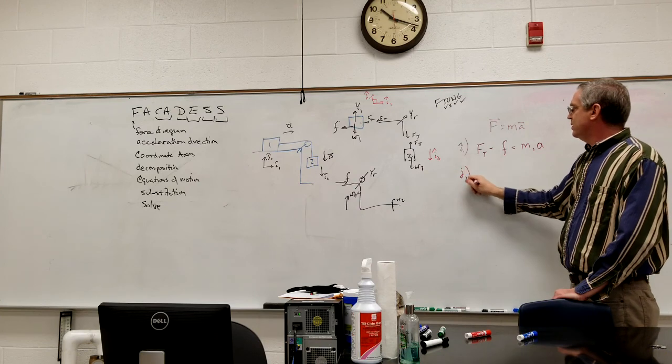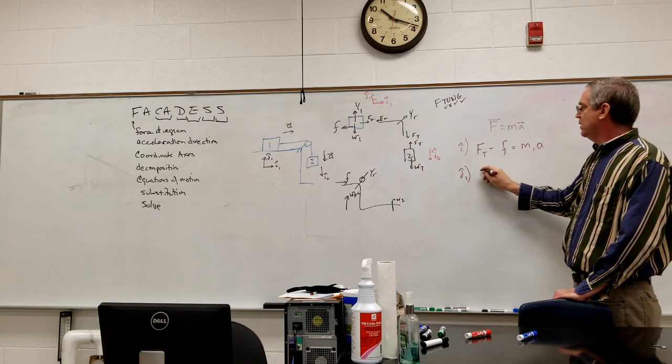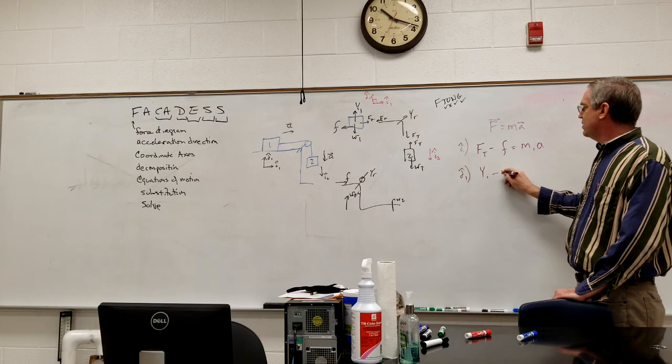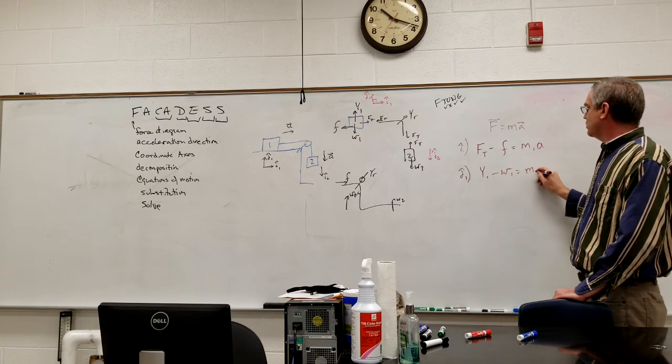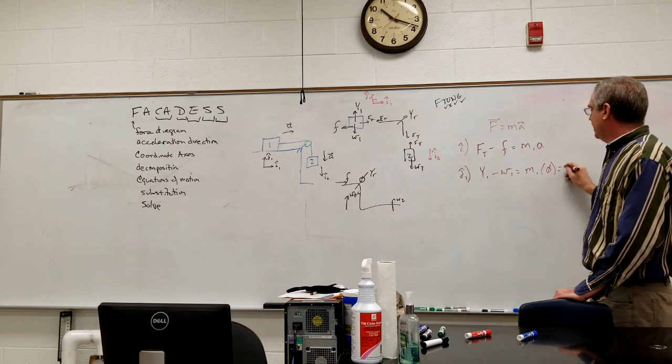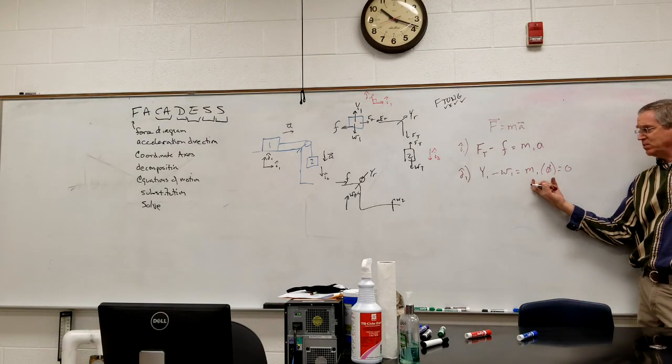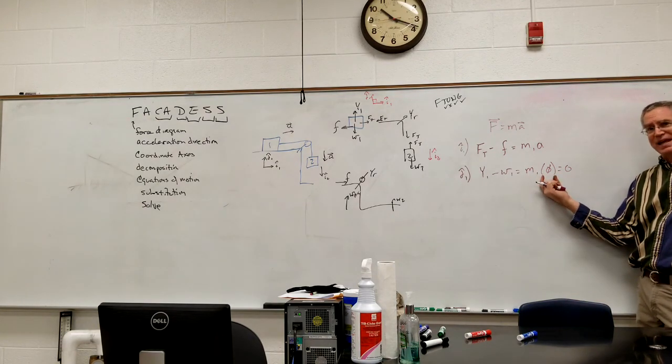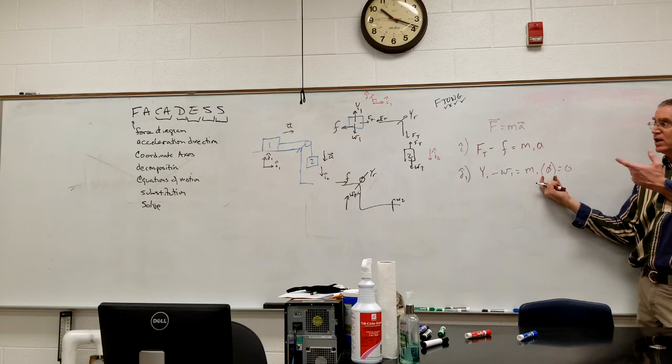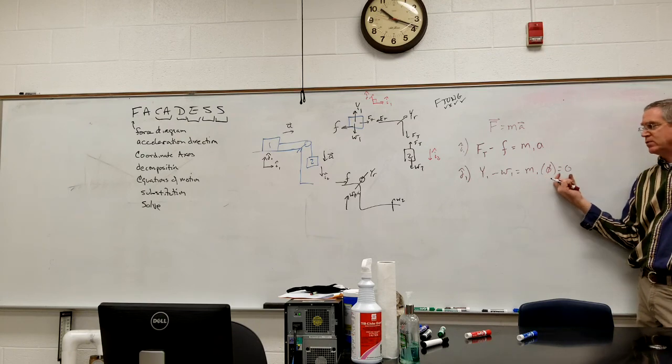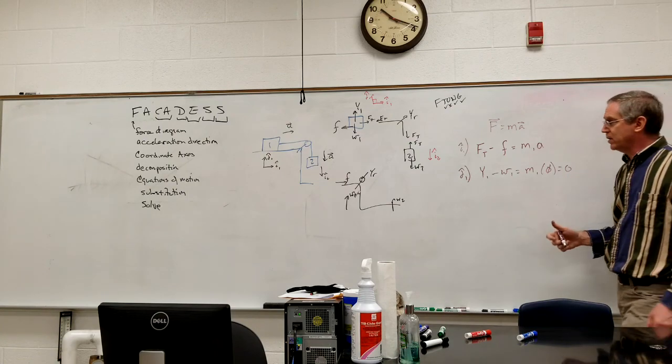My J one hat direction equation, I have Y one minus W one is equal to mass one times zero. At some point, we're just going to skip over that step, but I just want to emphasize at this point, it's mass times acceleration in the J hat direction, in the J one hat direction, which is zero. And so, basically, the normal forces and the weight equal each other in here.